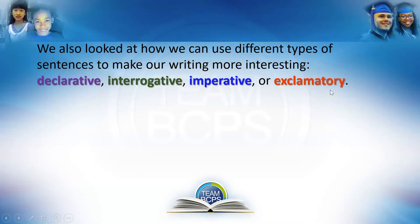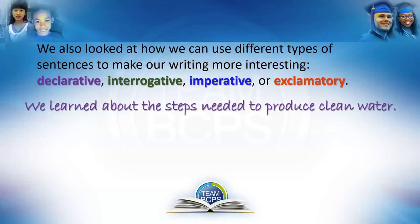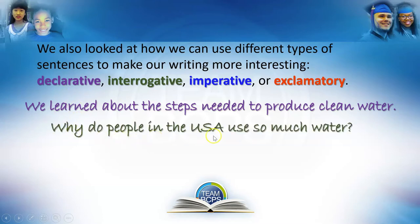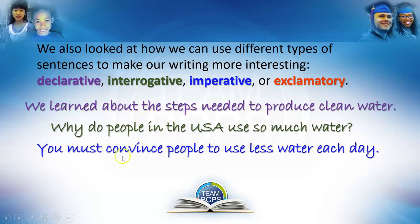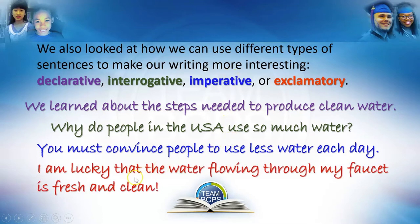So let's look at some examples of each of these. 'We learned about the steps needed to produce clean water.' This is an example of a declarative sentence. 'Why do people in the USA use so much water?' This is interrogative. 'You must convince people to use less water each day.' This is imperative. 'I am lucky that the water flowing through my faucet is fresh and clean!' Exclamatory.